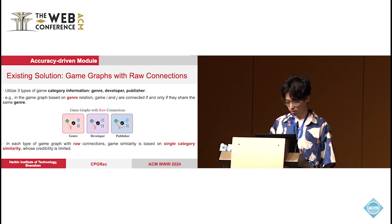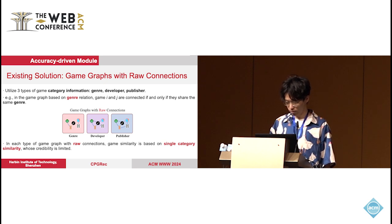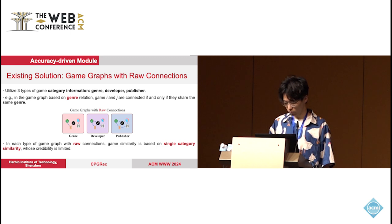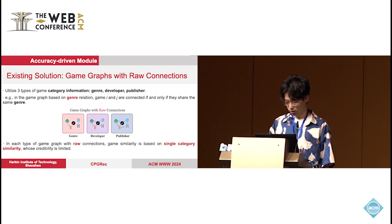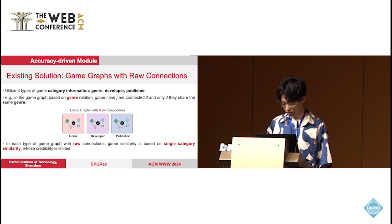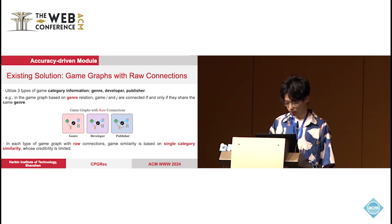First, what we need to know is that each game has many category attributes. Among them, genre, developer, and publisher are three qualitative pieces of information that are very important and convenient to utilize. The existing solution utilizes only one of these three relations in each game graph — what we call a game graph with raw connections. For example, in a graph based on genre relation, nodes representing game i and j are connected if and only if they share the same genre. In this role, the similarity of neighboring games is based on single-category similarity, whose credibility is limited.